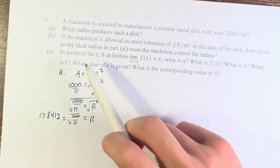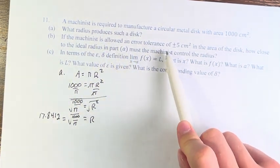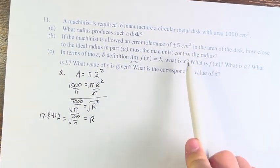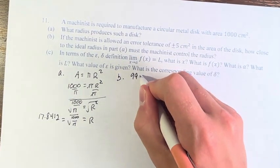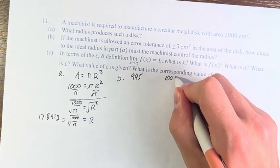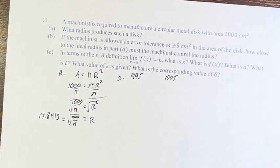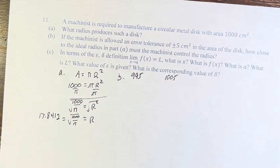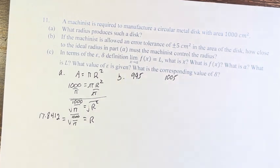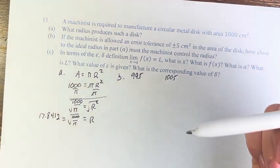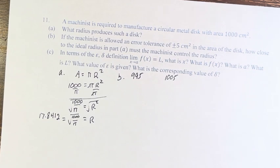We're also told that the machinist is allowed to have an error tolerance of plus or minus 5 centimeters squared in the area of the disc. So, the disc can go from 995 to 1,005 centimeters squared for an area. We're asked how close to the ideal radius, which we've calculated right here, must the machinist control the radius for this range. To do that, we have to find the radius for 995 and the radius for 1,005.